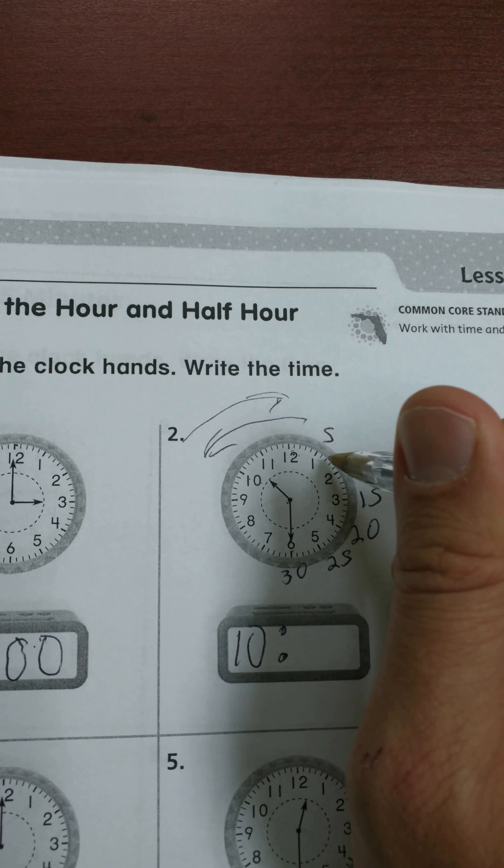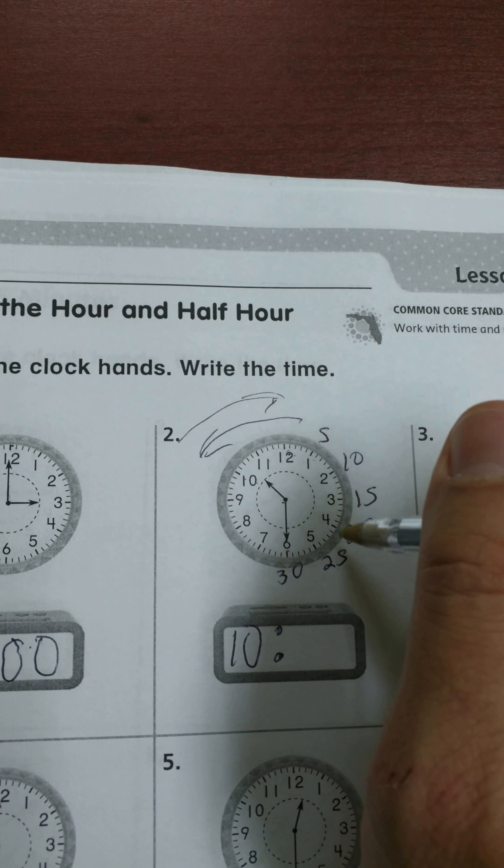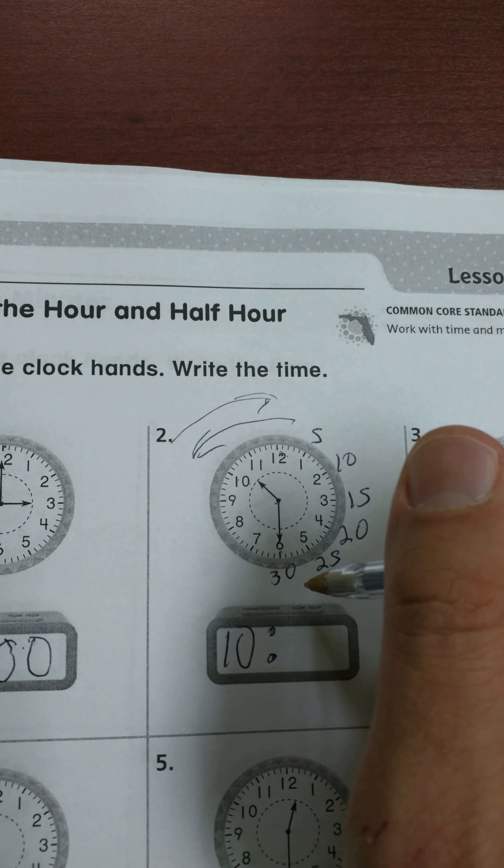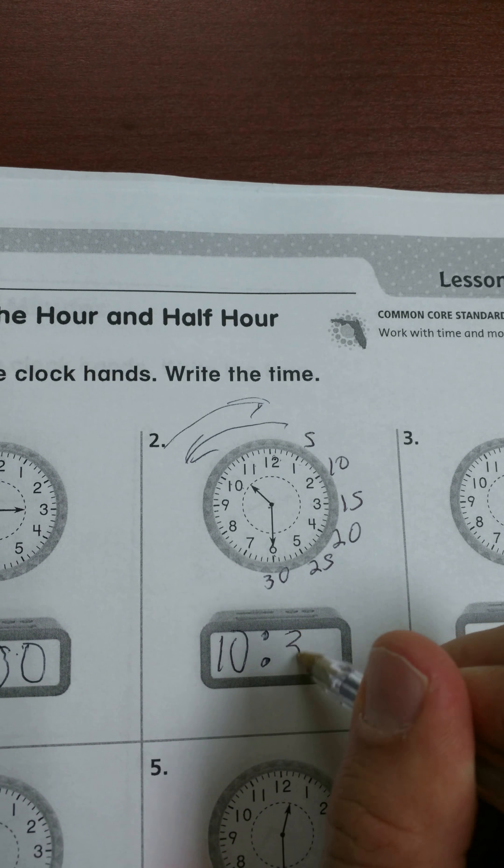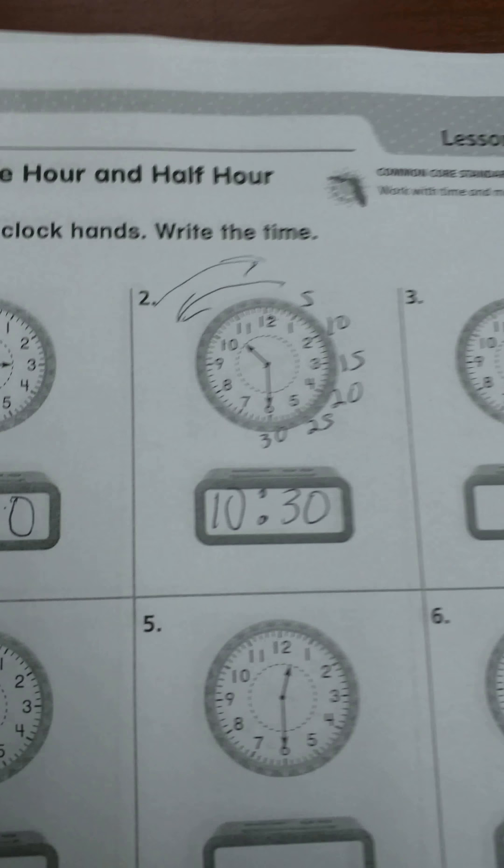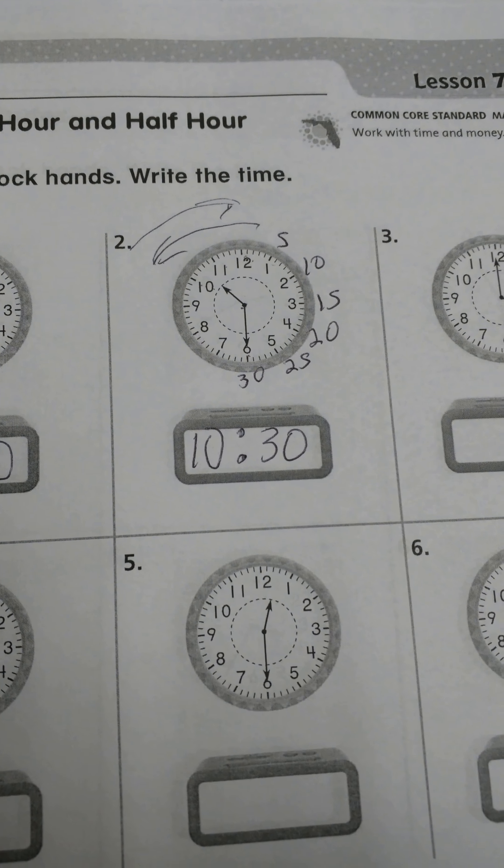Now if your child's just starting to learn about time, that would be a good way to remember. Just writing it out helps. So whenever the minute hand is pointing at the 6, it's always going to be 30 after, or 30 to 11. I'll do one more example that's sometimes confusing.